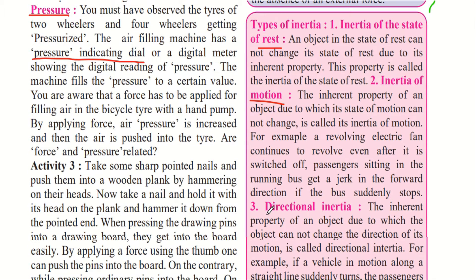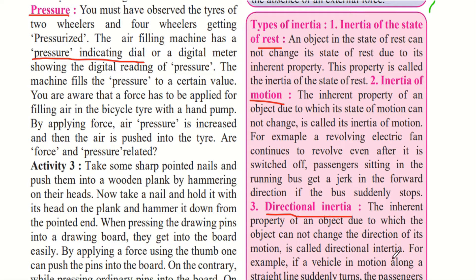The third type is directional inertia. This is the inherited property of an object due to which the object cannot change the direction of its motion. For example, when you roll a ball on the table, it will continue rolling in the direction you threw it — moving in a straight line unless you push it from the side to cause a direction change. Until an external force is applied, the ball will not change its direction.